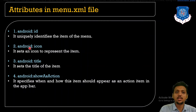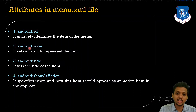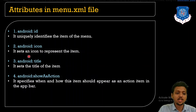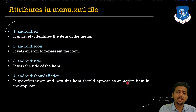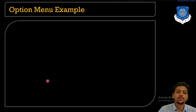The icon attribute allows you to set icons in the menu — for example, a notification icon or settings icon on the right side of the toolbar. The android:title attribute sets the title for a particular item. The showAsAction attribute specifies whether you want the action item to appear in the app bar or not.